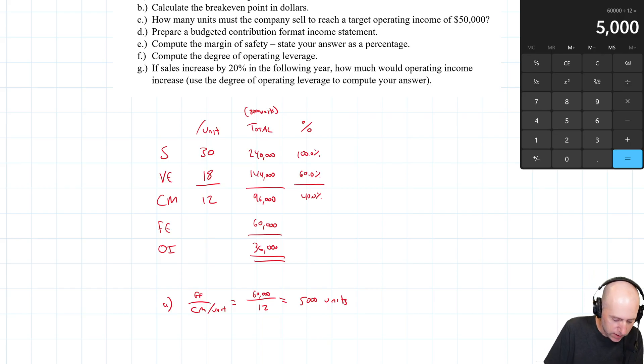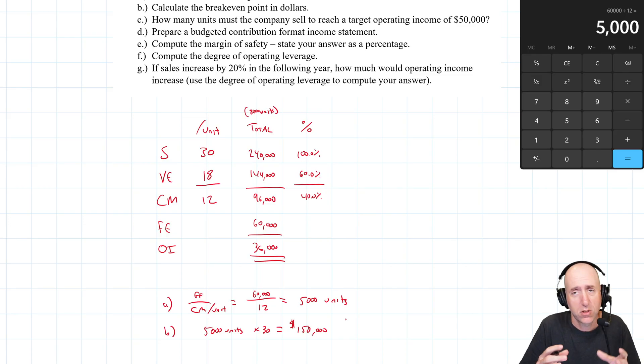So we need to sell 5,000 units to breakeven. Now it says calculate the breakeven in dollars. I don't need to look back at my formula table. If I need 5,000 units to breakeven and I sell these things for $30 each, that's $150,000 in sales. So my breakeven sales in dollars, my breakeven point in dollars is $150,000.